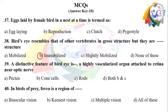Answers: Question 38 right option D — immobilized; bird's eye resembles other vertebrates in gross structure but differs in being immobilized. Question 39 right option A — pecten; pecten is a highly vascularized organ attached to the retina near the optic nerve. Question 40 right option B — keenest vision; in birds of prey the fovea is a region specialized for keenest vision.